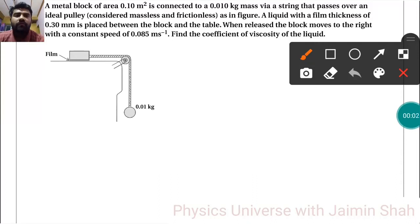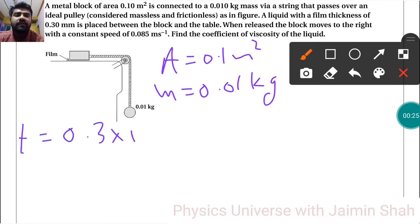The question is: a metal block of area 0.1 meter square is connected to a mass of 0.01 kilogram via a string that passes over an ideal pulley. A liquid with a film thickness T = 0.3 × 10^-3 meters is placed between the block and the table.